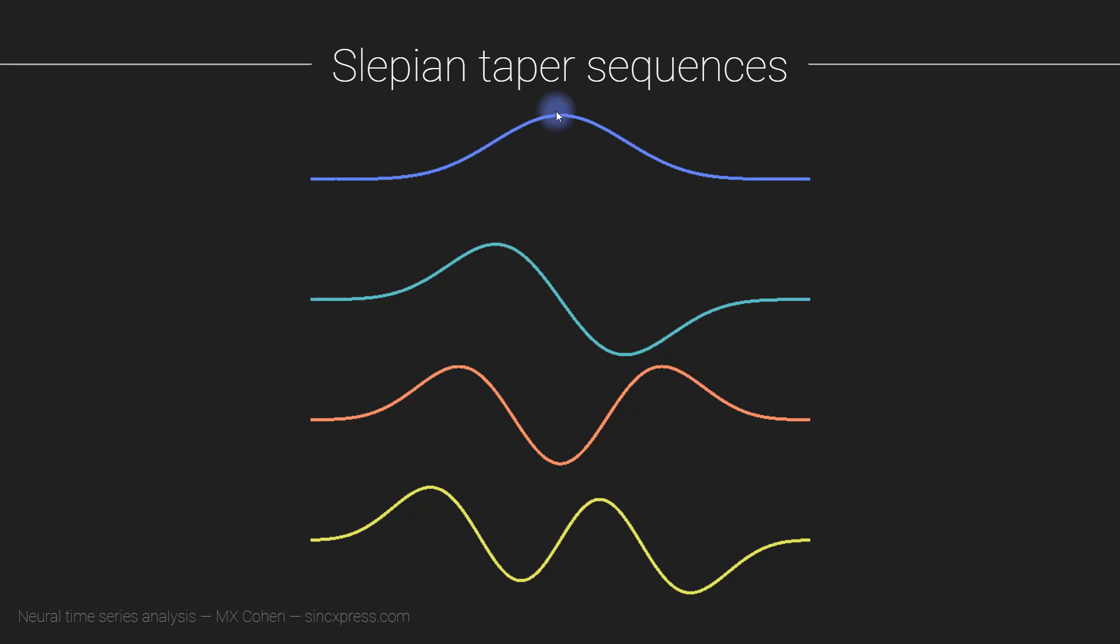So for example, this first taper is going to highlight only the time points towards the middle of the data snippet. And the beginning and the end of the data snippet will be attenuated.